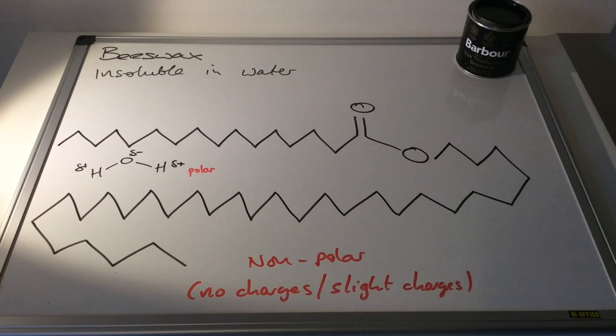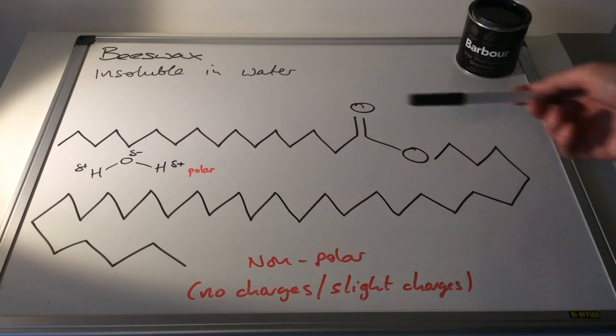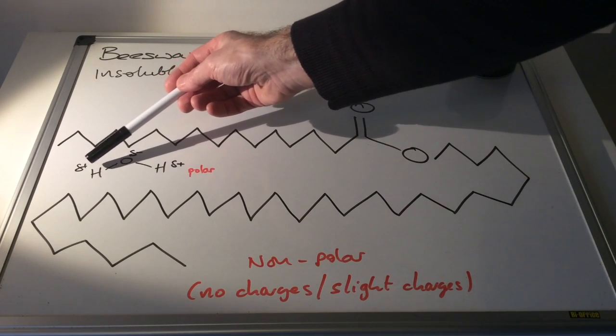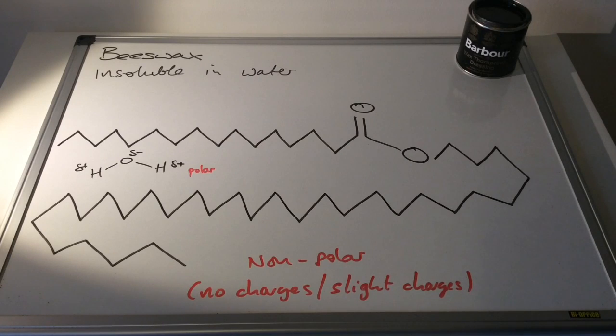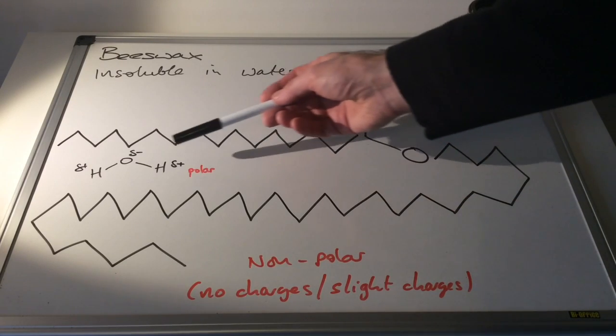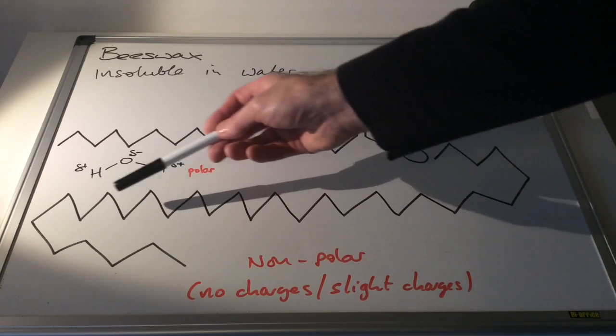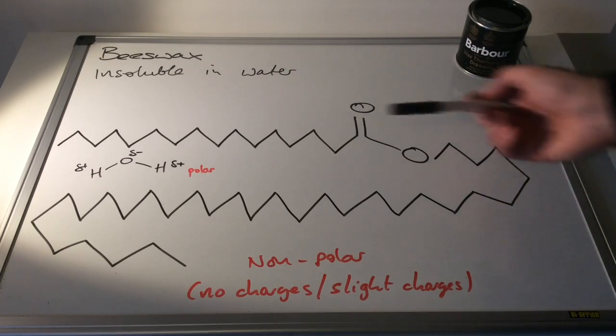If we introduce a water molecule now—you can see I've drawn an H2O molecule up here—you can see that I've drawn these slight charges, these Delta plus charges on the hydrogens and the Delta minus on the oxygen, and so that makes the water molecule polar. Remember, the wax molecule is non-polar, so in very simple terms, the water molecule being polar cannot interact with the wax molecule which is non-polar.